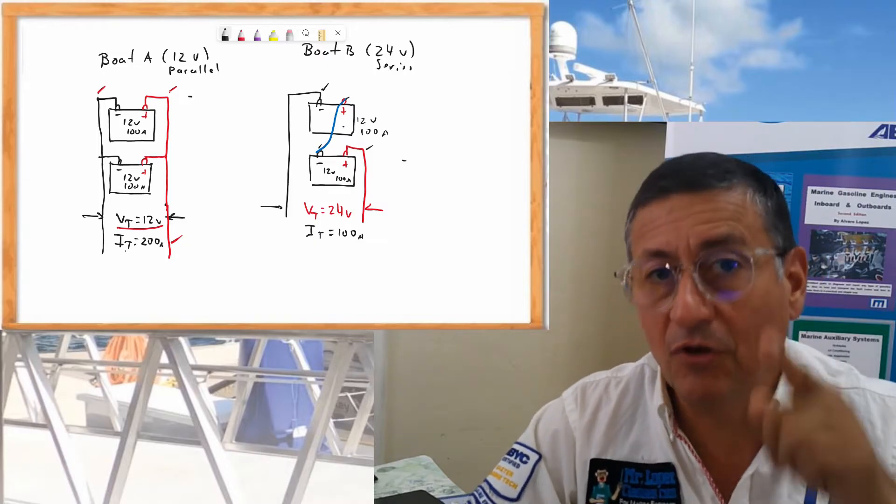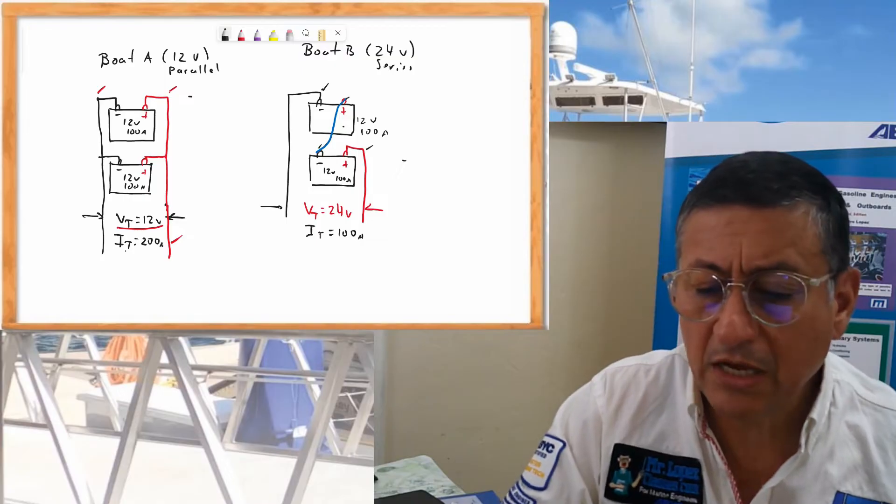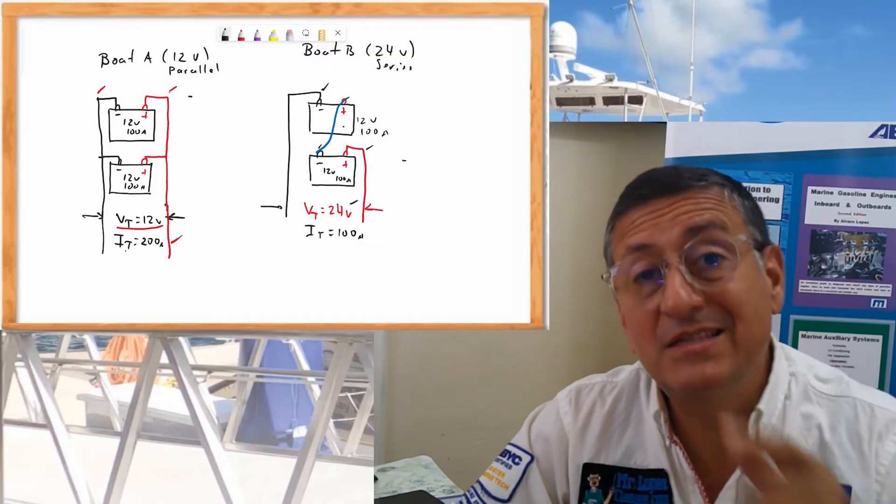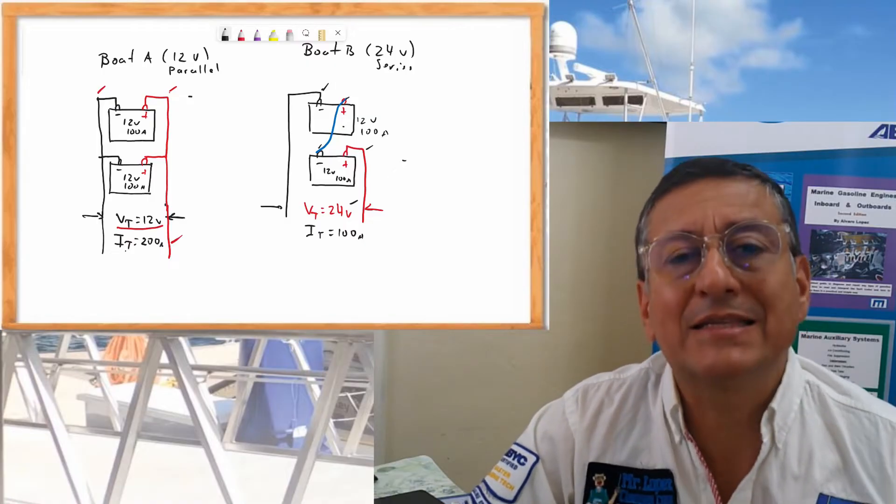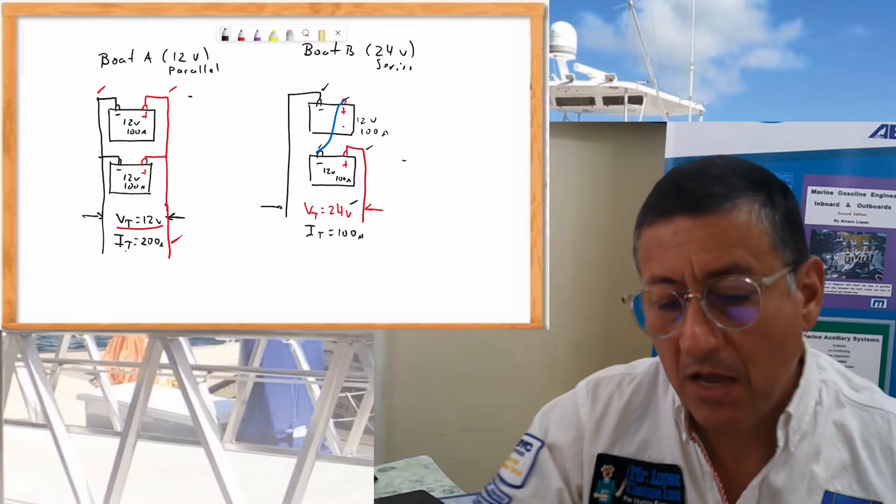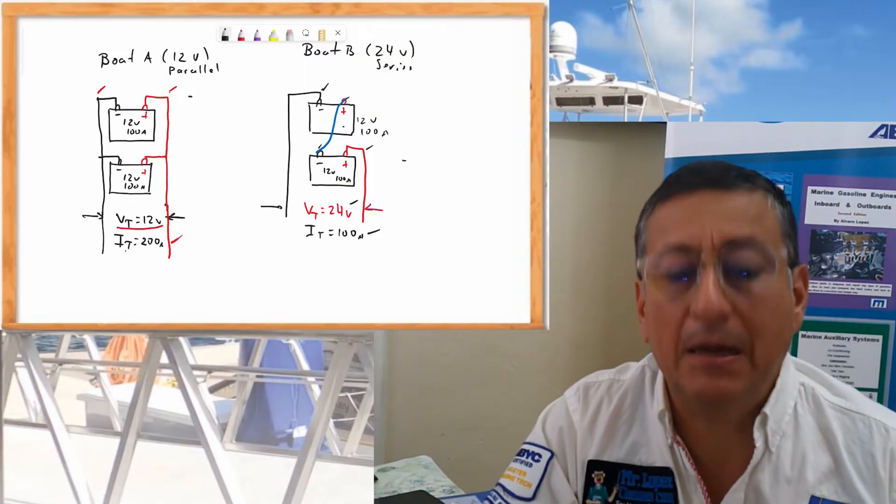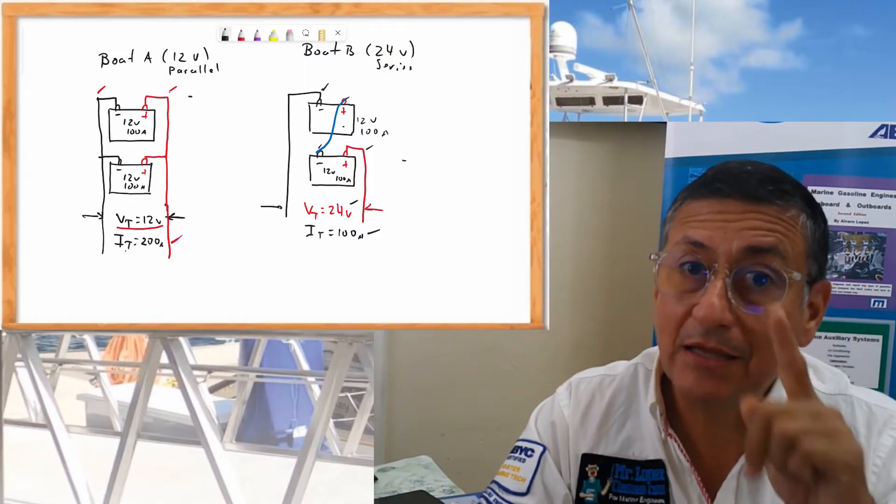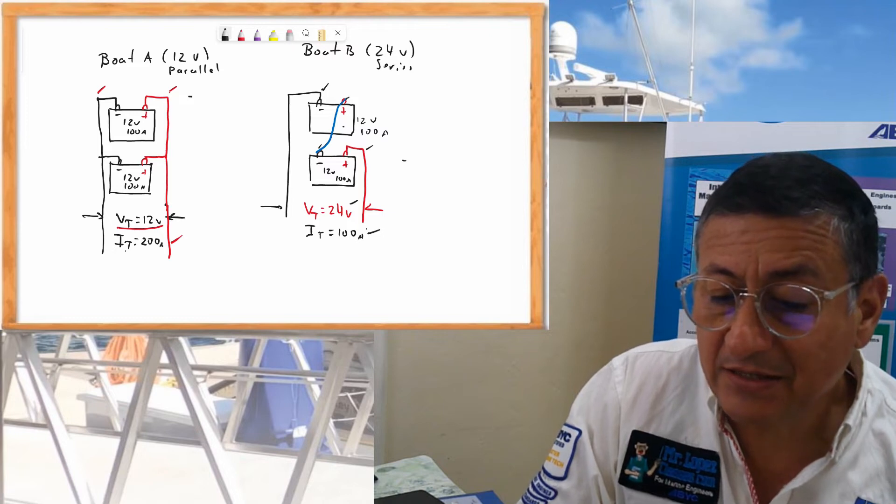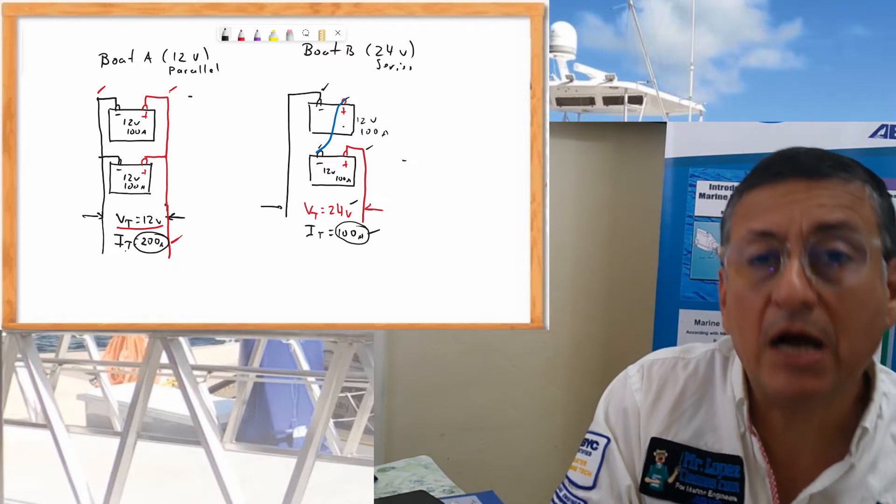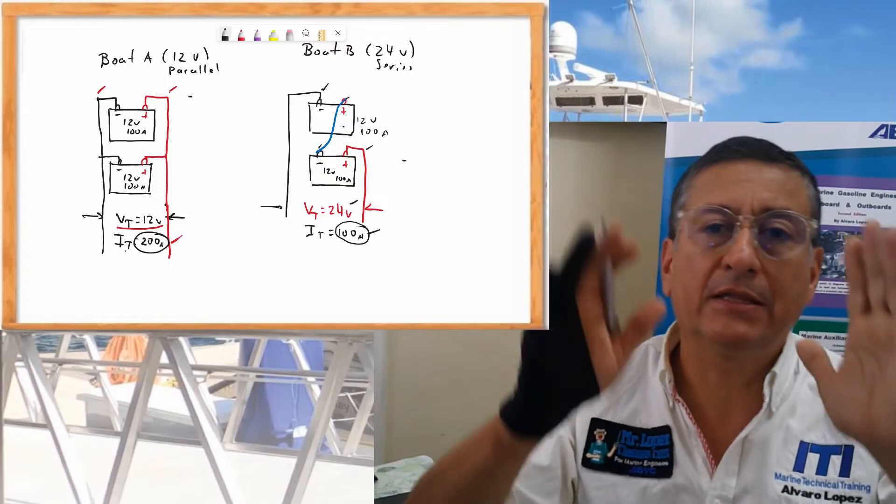Because it's in series the voltage increases. The output voltage will be 24V. And because it's in series the intensity stays constant. It's the same. In this particular case the intensity will be 100 amps. That's the first difference. In series I have 100 amps. In parallel I have 200 amps. That's number one.